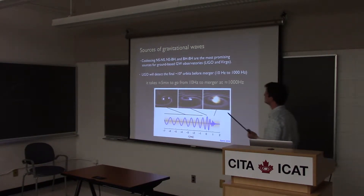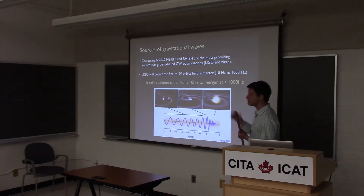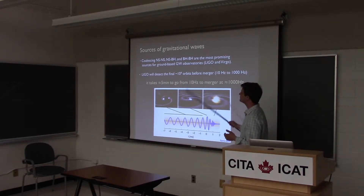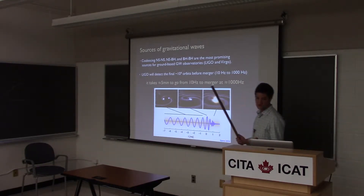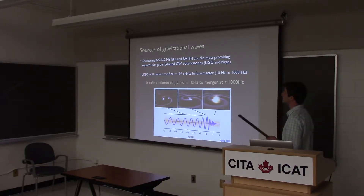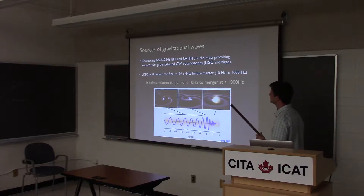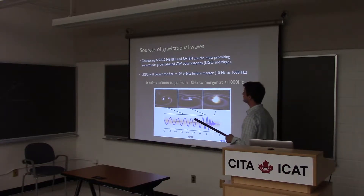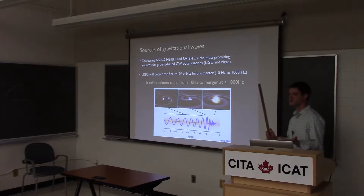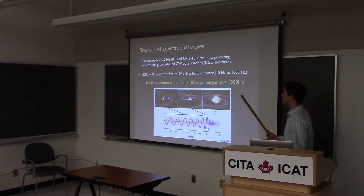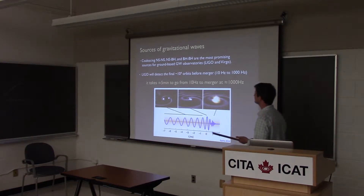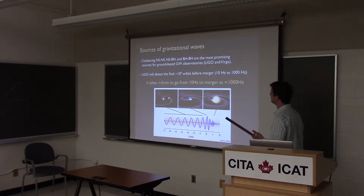Sources of gravitational waves for ground-based observatories include coalescing neutron star–neutron star, neutron star–black hole, and black hole–black hole binaries. LIGO will see something like the last 10,000 orbits before merger — roughly the last five minutes of the binary's life — during which the orbital frequency sweeps from about 10 Hz to 1,000 Hz.